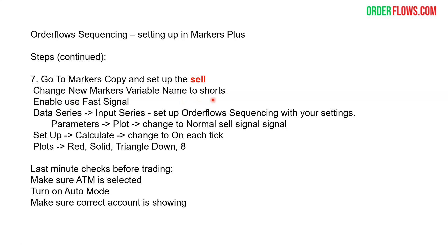Same thing for the sells, only this time you're doing it for the shorts. Change the name to shorts, enable fast signal, and set up the data series. Set up the order flow sequencing with the same settings you use for your buys, but this time change the plot from normal buy signal to normal sell signal. Then change the calculation from on bar close to on each tick, and change the plots to red triangle down, size eight.